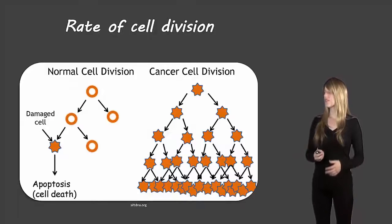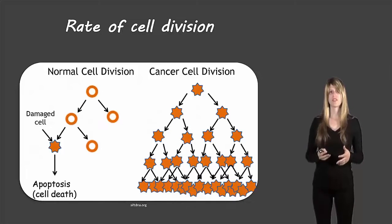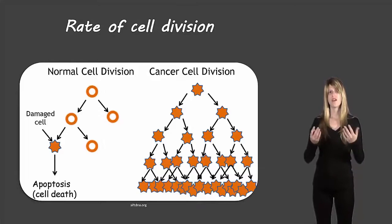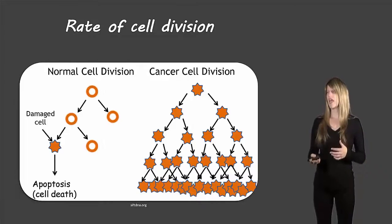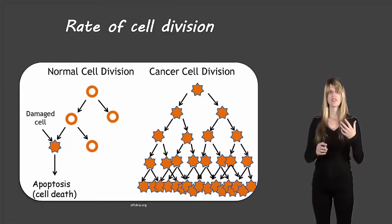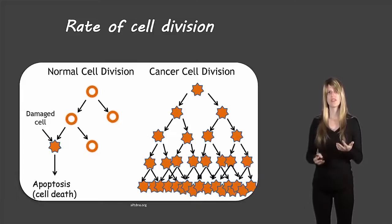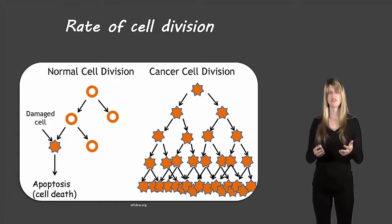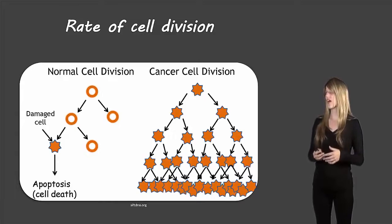Let's take a look at how a cell progresses through the cell cycle — when it's a regular cell versus a cancer cell. Normal cells will progress through the cell cycle at a slower pace. Some cells in the body will divide faster than other cells, but they all divide at a slower pace than a cancer cell.